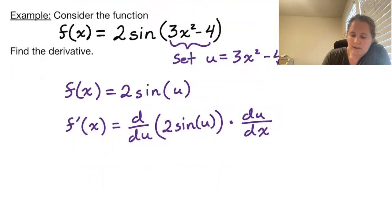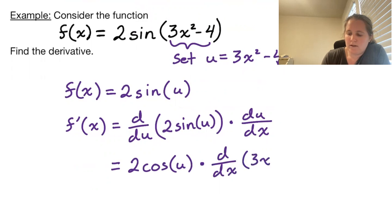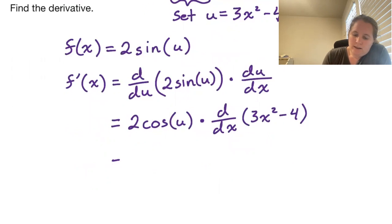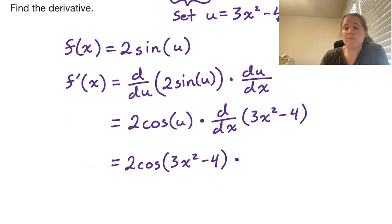The derivative of 2 sine of u with respect to u is 2 cosine of u. Then we need the derivative with respect to x of 3x squared minus 4. Plugging in u, we have 2 cosine of 3x squared minus 4, and then we multiply by the derivative of 3x squared minus 4, which is 6x. So we end up with 12x cosine of 3x squared minus 4.